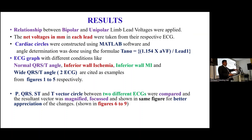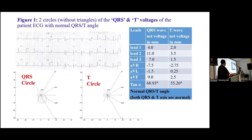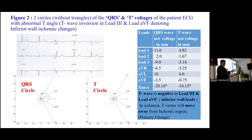The results were constructed using MATLAB software, applying the relationship between bipolar and unipolar limb leads from existing formulas. Five conditions have been shown, with four cardiector figures magnified for better appreciation. In the first figure showing only the limb leads, the QRS circle and T circle are shown with a normal QRS-T angle. In the second figure, the T wave is not in the normal quadrant — it is moving away from the inferior leads — indicating inferior ischemic changes, with the T wave negative in Lead 3 and AVF.